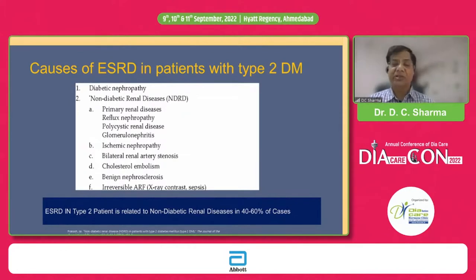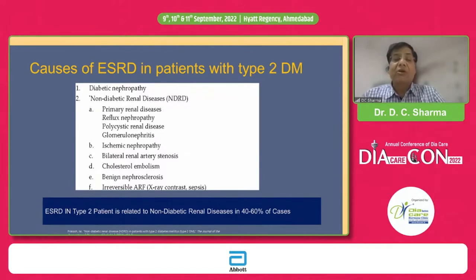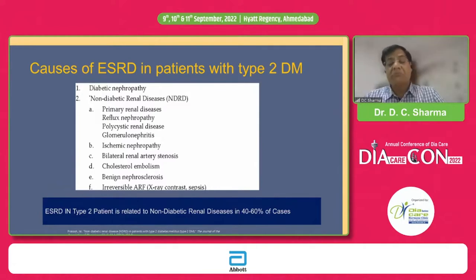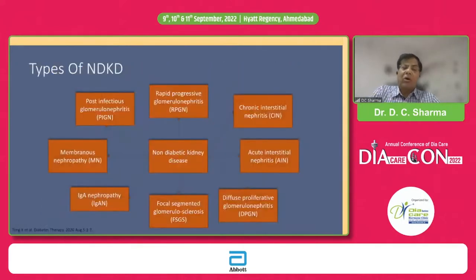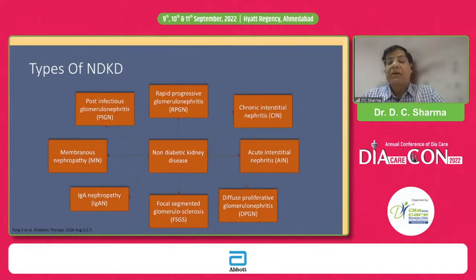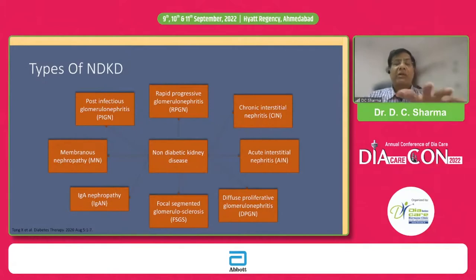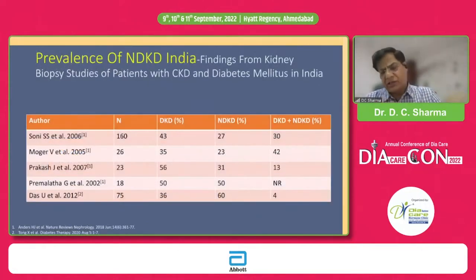We really want to make an early diagnosis to pick up non-diabetic kidney disease, many of which may be treatable, thereby improving outcomes. The causes of non-diabetic renal disease in diabetic patients include primary renal diseases, ischemic nephropathy, renal artery stenosis, cholesterol embolism, benign nephrosclerosis, and other renal injuries. The diseases can be various types: RPGN, chronic interstitial nephritis, acute interstitial nephritis, diffuse proliferative glomerulonephritis, focal segmental nephritis, IgA nephropathy, membranous nephropathy, and likewise.